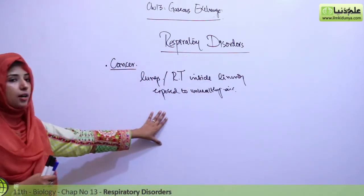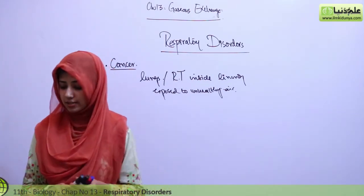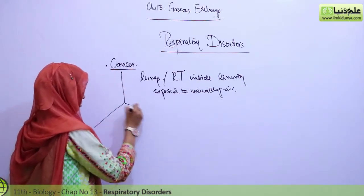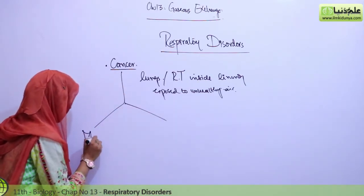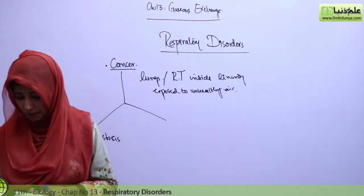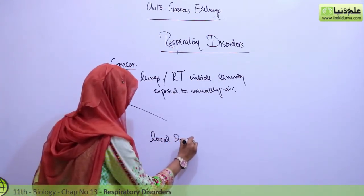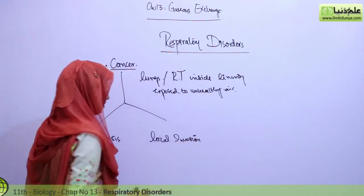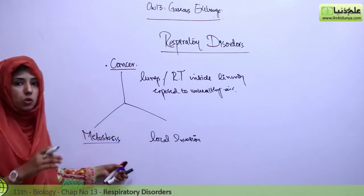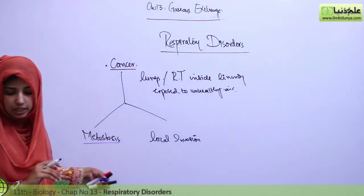Cancer has two basic classes. First, you can classify it on the basis of metastasis. A metastatic cancer — metastasis — is where cancerous cells are not confined to one place; they spread through the blood.